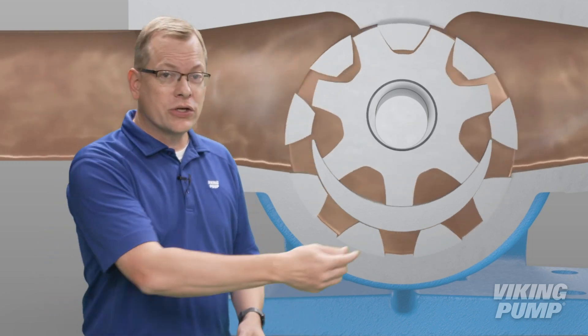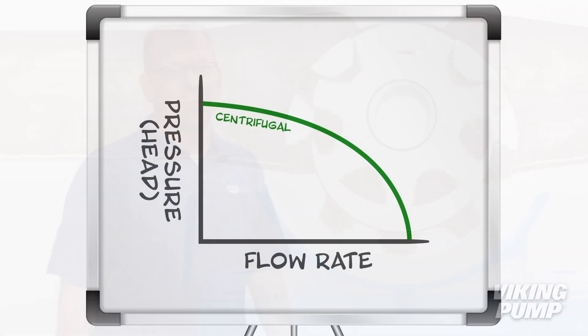These are flow-creating machines. With each rotation of the pumping elements, a set volume of liquid is transferred from the inlet pipe to the outlet pipe. Overlaying a Viking pump curve on a centrifugal pump curve, and you don't get a curve at all. Instead, we basically get a vertical line at one set flow. This overlay helps to demonstrate just how different these technologies are in how they move liquids.